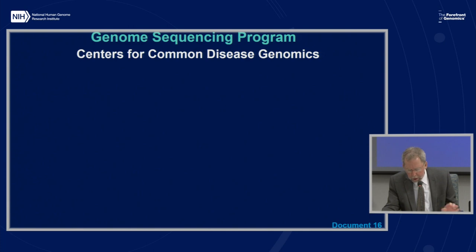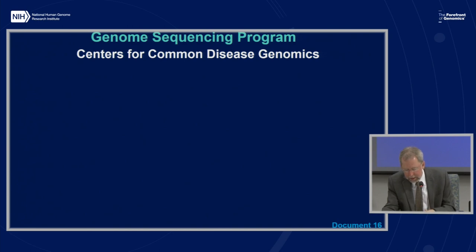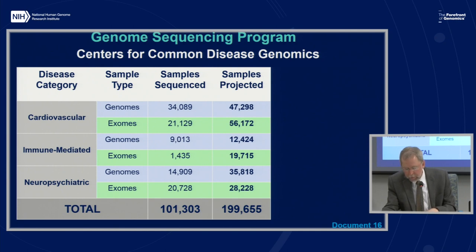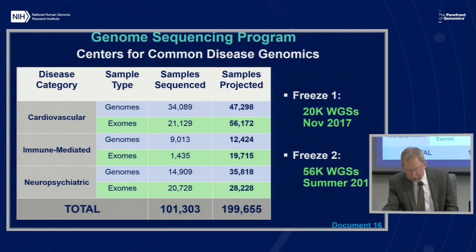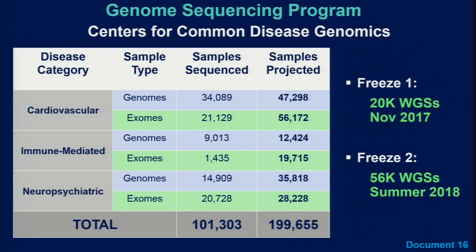The Centers for Common Disease Genomics use large-scale genome sequencing to discover genomic variants underlying common diseases, including rare risk and protective variants, and aim to understand common disease architectures. As of May 2018, the centers had sequenced over 101,000 samples — 58,000 whole genome sequences and about 43,000 whole exome sequences — with a goal of sequencing about 200,000 samples by December 2019. Freeze 1 of these data, which includes 20,000 whole genome sequences, was made available in November 2017. The centers are working on Freeze 2, which will include whole genome sequences generated as of May 1st, 2018, intended for release this summer.